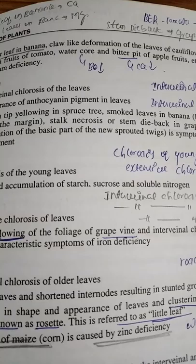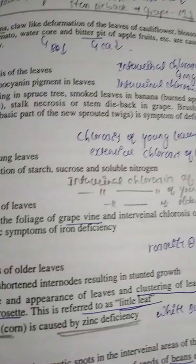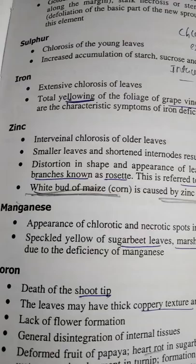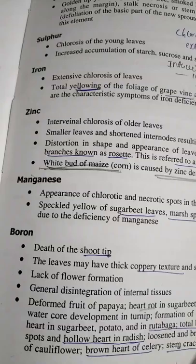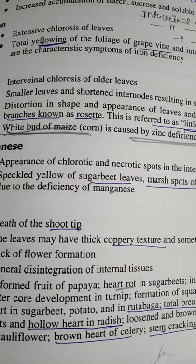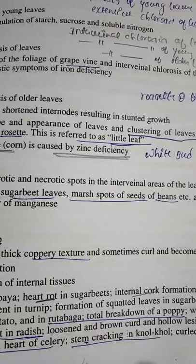Greenback symptom in tomato fruit is caused by deficiency of potassium. Cigar leaf in banana is caused by calcium deficiency. Claw-like deformation of leaves of cauliflower is also caused by calcium deficiency. Water core is caused by boron, and bitter pit of apple fruits is caused by calcium deficiency. Little leaf is caused by deficiency of zinc. White bud of maize is caused by deficiency of zinc — this has been asked many times. Speckled yellow of sugar beet leaves and marsh spot of seeds of bean are caused by manganese deficiency.